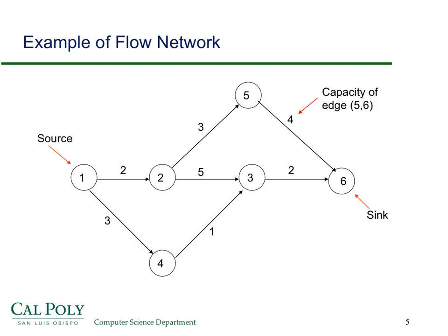Here's a very simple example of a flow network. We're going to work through this example very carefully in the next screencast. Here's the source labeled one, the sink labeled six, and there are six vertices or nodes.